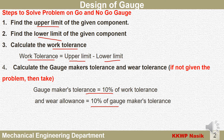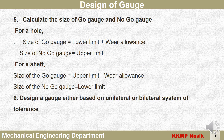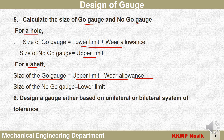The fifth step is calculate the size of go gauge and no-go gauge. For a hole: size of go gauge equals lower limit plus wear allowance; size of no-go gauge equals upper limit minus wear allowance. For a shaft: size of go gauge equals upper limit minus wear allowance; size of no-go gauge equals lower limit.